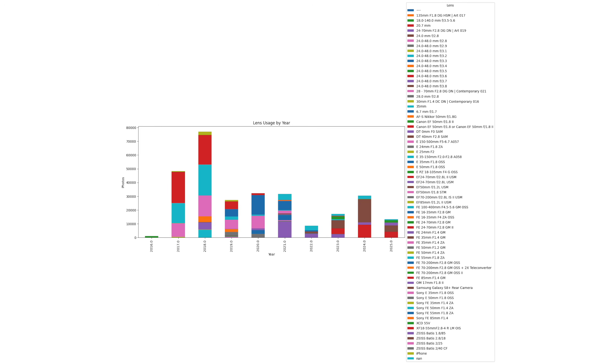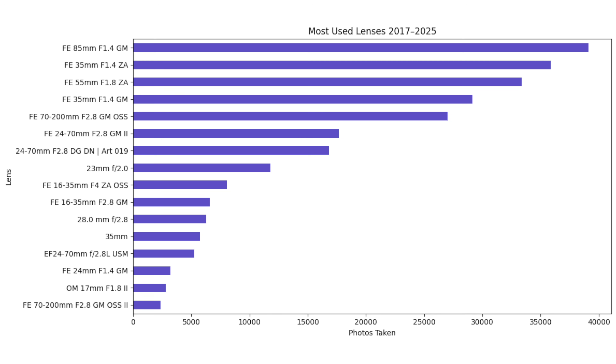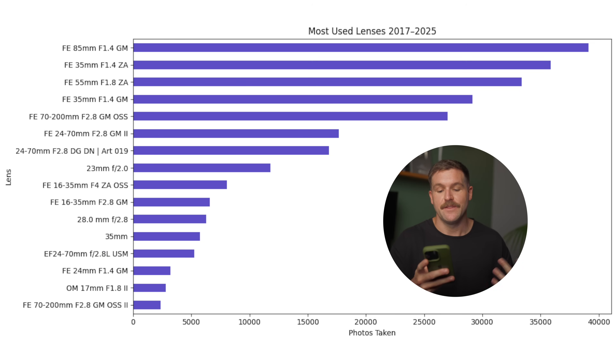Looking at lens usage — same as with cameras, when I first crunched the numbers the graph had every lens I'd ever shot with and was way too confusing to read. I crunched it down further, and while it still shows which years I was using which lens, I also organized it to show my most used lenses. Between 2017 and 2025, the 85mm f1.4 G Master was my most used lens. I was shooting super cool zoomed-in coffee photos at f1.4, living in Northern Thailand, going to cafes — that's really where I found my love for photography. I also shot with the 35mm f1.4 ZA Distagon, a fantastic Sony Zeiss lens.